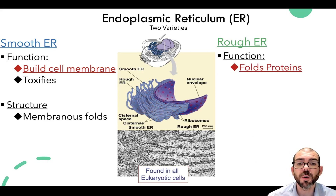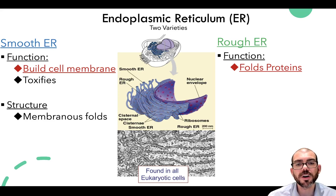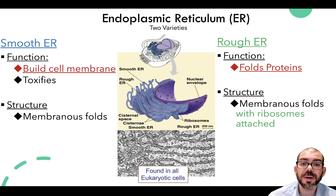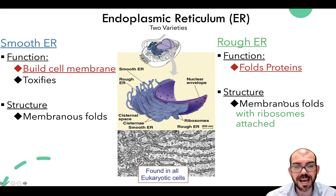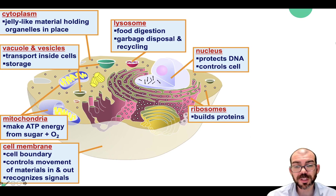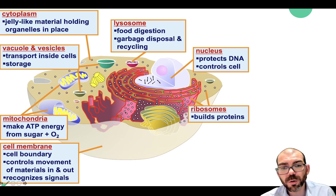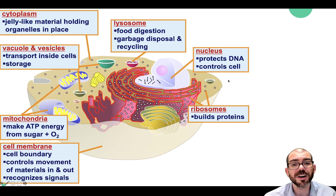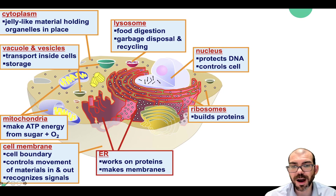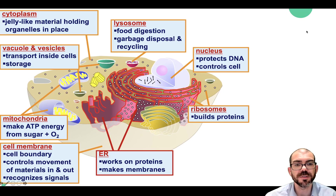The other variety is rough ER. The function of the rough ER is to fold proteins — proteins start at a primary structure, then go to secondary, tertiary, and quaternary. The rough ER aids in that folding from primary structure onward. Its structure is also a membranous fold, but it's called rough because it has ribosomes attached to it, making it appear bumpy under magnification. On a cell diagram, the ER is always found around the nucleus because it folds proteins and makes membrane using instructions from the DNA. The smooth ER detoxifies and makes membrane; the rough ER, attached directly to the nucleus, has ribosomes and is involved in protein folding.